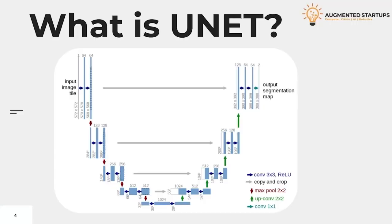In this lecture, we are going to get a better understanding of U-Net. U-Net is a convolutional neural network architecture that was developed for biomedical image segmentation by Olaf Ronneberger in 2015 at the University of Freiburg, Germany. It is one of the most popularly used architectures for any segmentation task. It is a fully convolutional neural network that is designed to learn from fewer training samples.